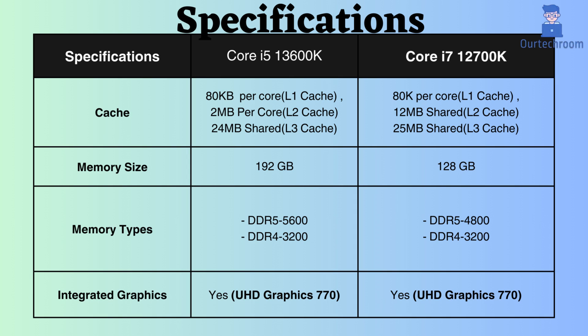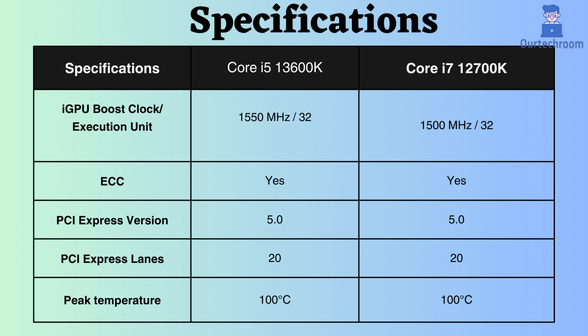Both processors feature integrated graphics in the form of UHD Graphics 770, and the boost graphics frequency for both is 1,500 MHz. Both processors support ECC, making them suitable for critical systems. They also support PCI version 5 with 20 PCI lanes, facilitating the handling of more peripheral devices and faster data transfer rates.